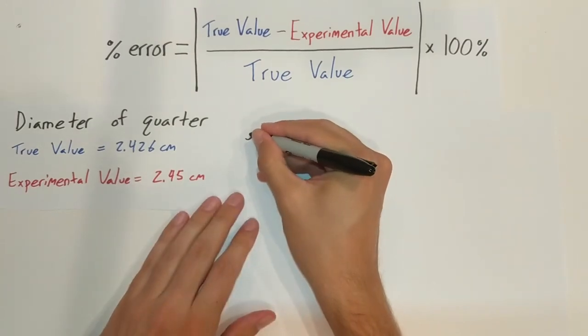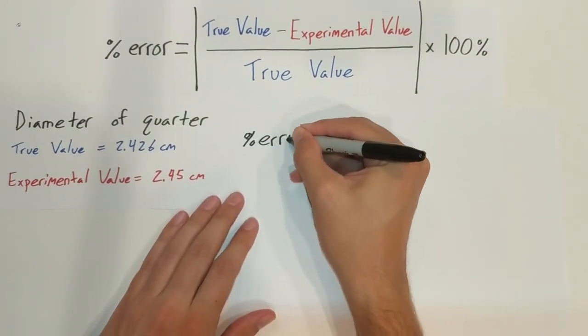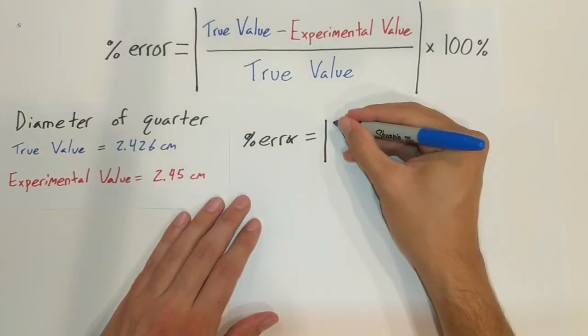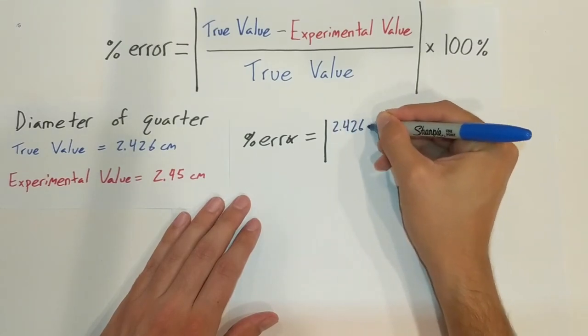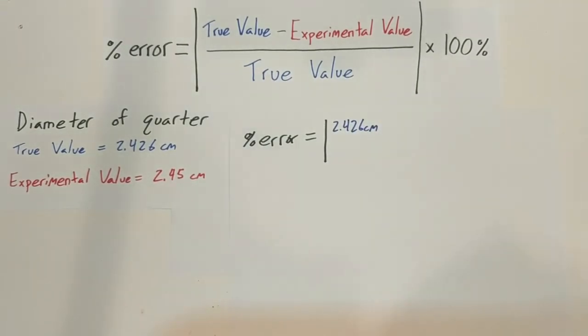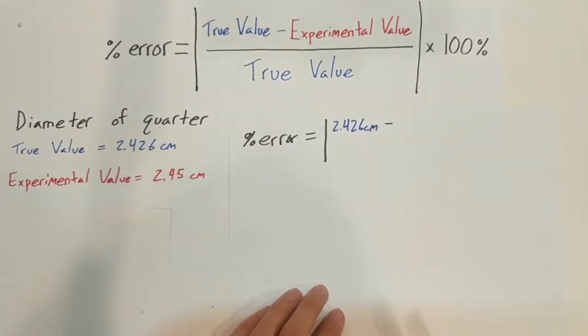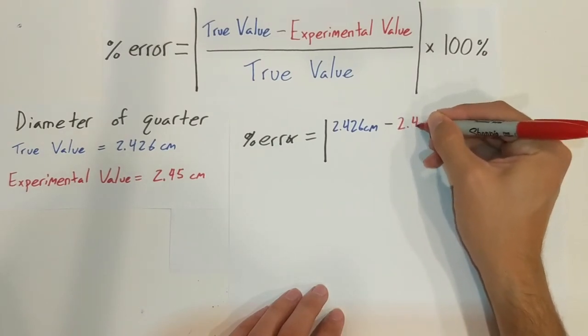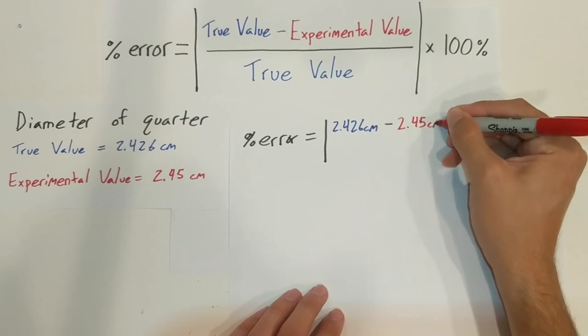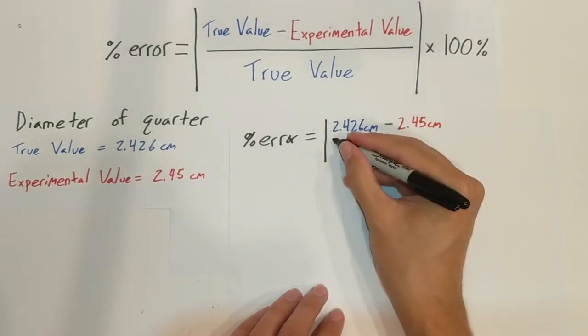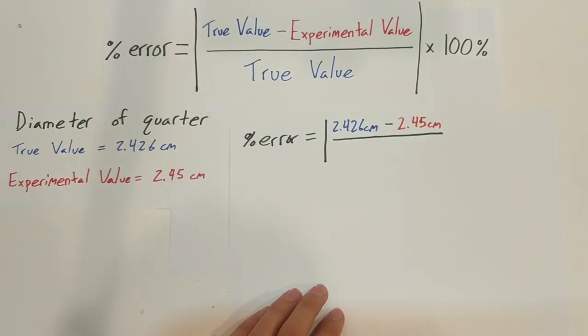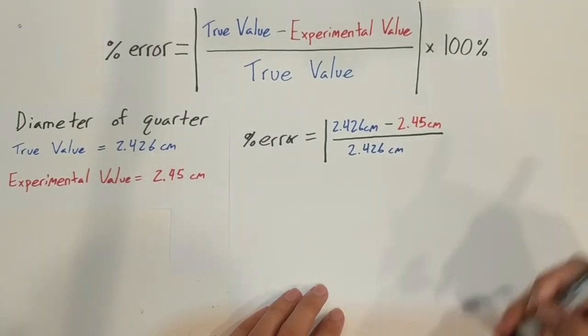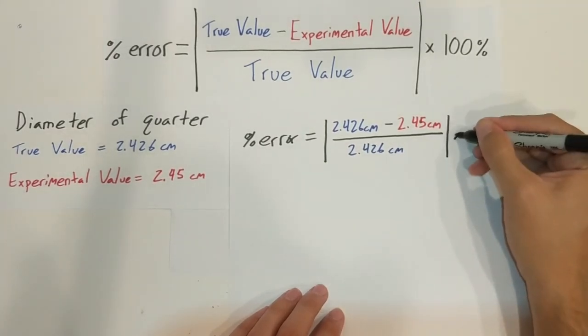So we got our percent error is equal to absolute value of 2.426 centimeters (so that's the actual value of the diameter of a quarter) minus what I found it was using a ruler, so 2.45 centimeters, divided by 2.426 centimeters. And then to make it a percent, we just gotta multiply by 100 percent.